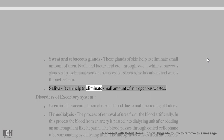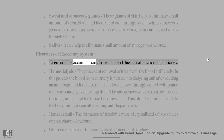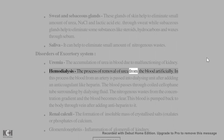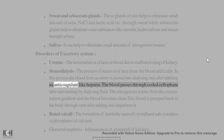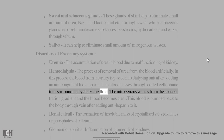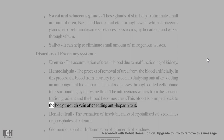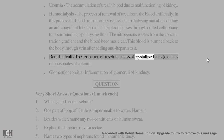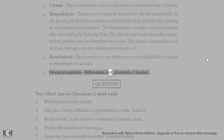Saliva can help eliminate small amounts of nitrogenous wastes. Disorders of excretory system: Uremia — accumulation of urea in blood due to malfunctioning of the kidney. Hemodialysis — the process of removal of urea from blood artificially; blood from an artery is passed into a dialysing unit after adding an anticoagulant like heparin; the blood passes through a coiled cellophane tube surrounded by dialysing fluid; nitrogenous wastes diffuse out and the blood is pumped back through a vein after adding anti-heparin. Renal calculi — formation of insoluble masses of crystallized salts, oxalates or phosphates of calcium. Glomerulonephritis — inflammation of glomeruli of the kidney.